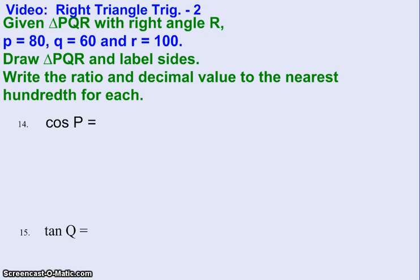The first thing we're told to do is to draw the triangle and label its sides. So find just a little bit of room on the right side of this problem. We know it's a right triangle because they tell us right angle is R.